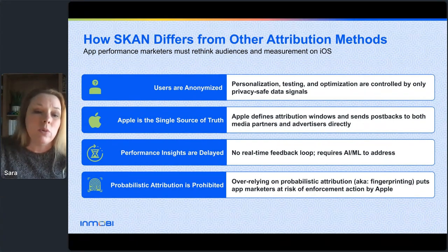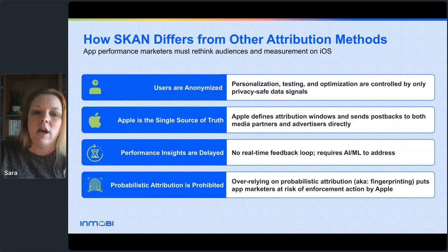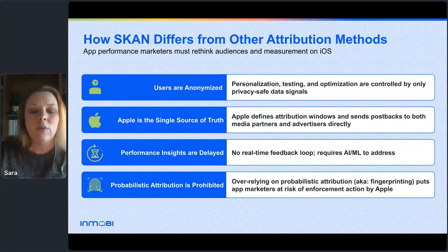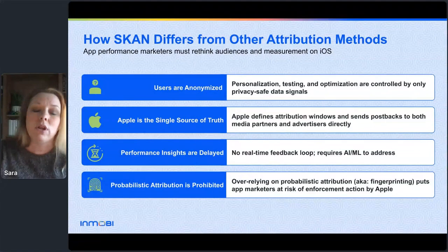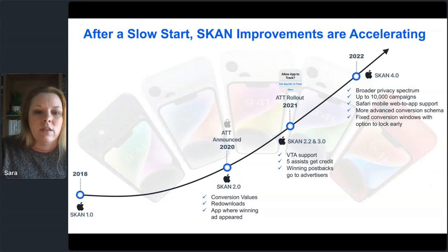Here is a little bit about how SKAN differs from other attribution methods. Number one, users are anonymized — app tracking transparency makes us rely on privacy-safe data signals when thinking about how to optimize campaigns. Number two, Apple is the single source of truth for attribution metrics — the only deterministic source of iOS performance when users are not opted in to share their IDFA. Third, performance insights are delayed, requiring AI and machine learning to bridge that gap. And lastly, probabilistic attribution is technically prohibited in Apple's policies, which is why advertisers are starting their SKAN journey.